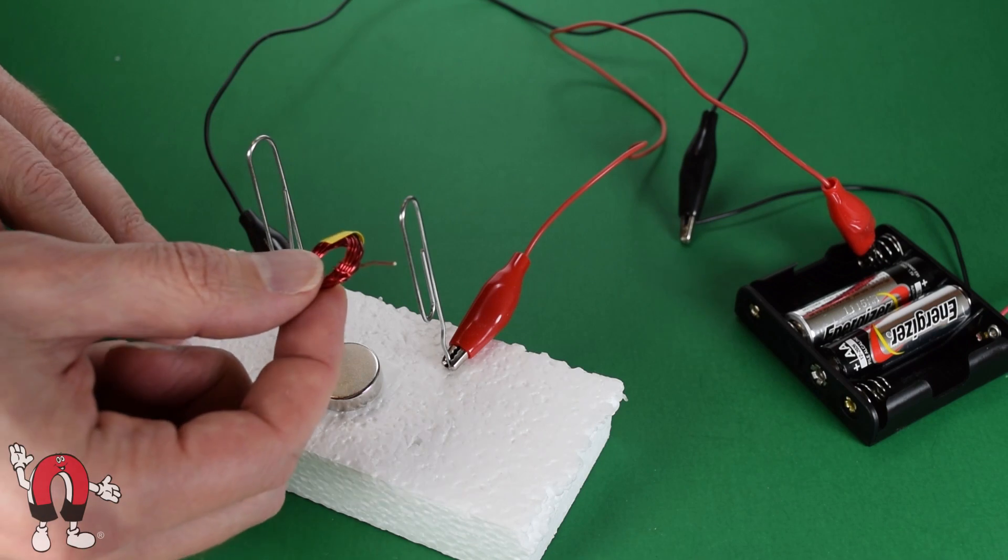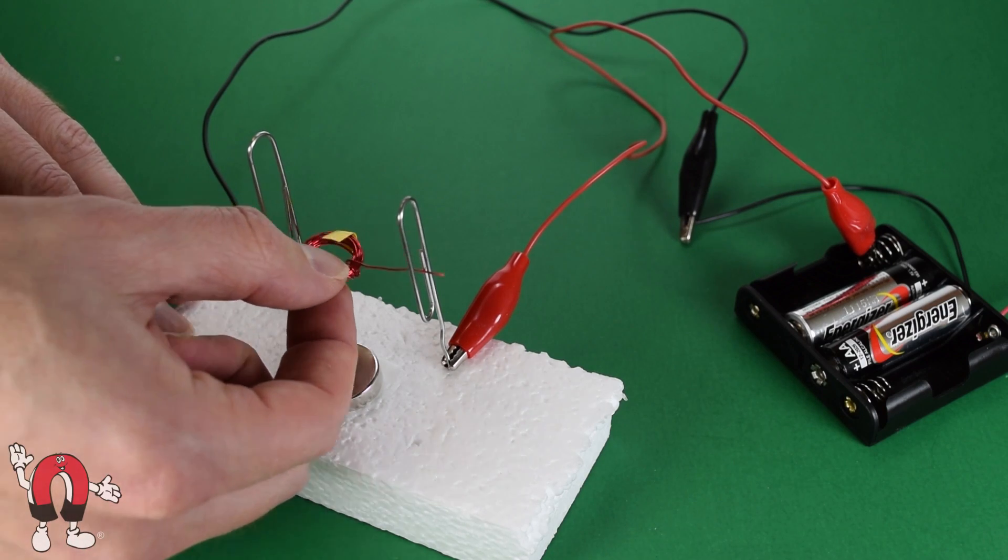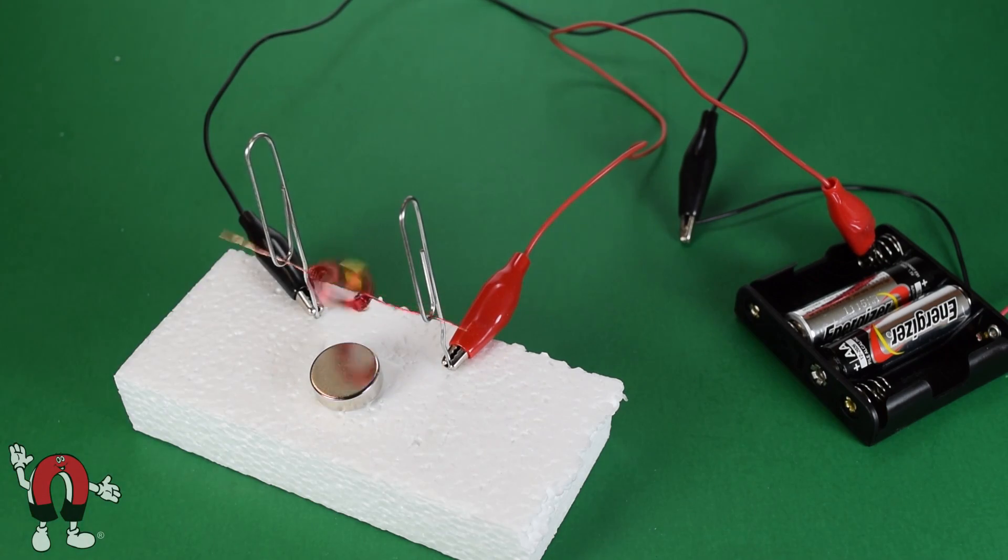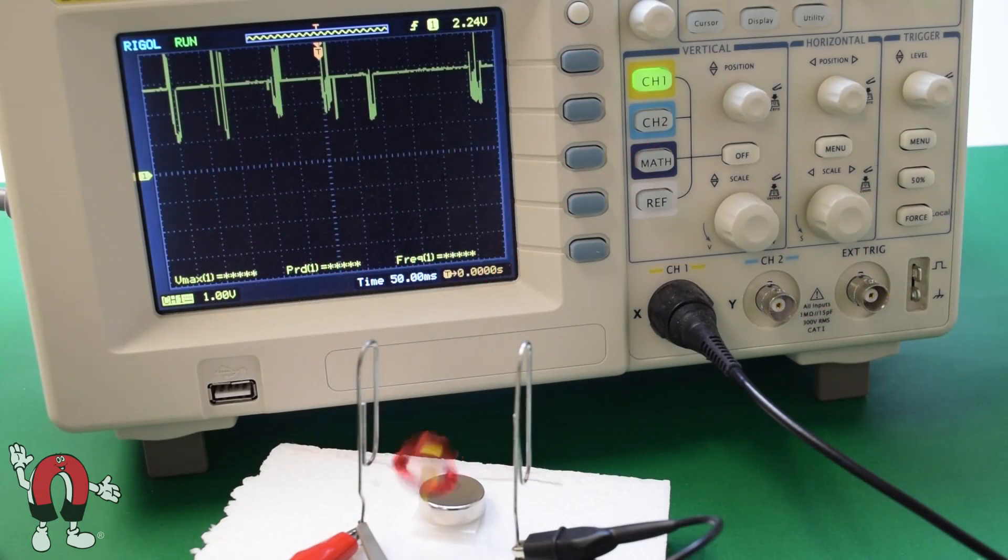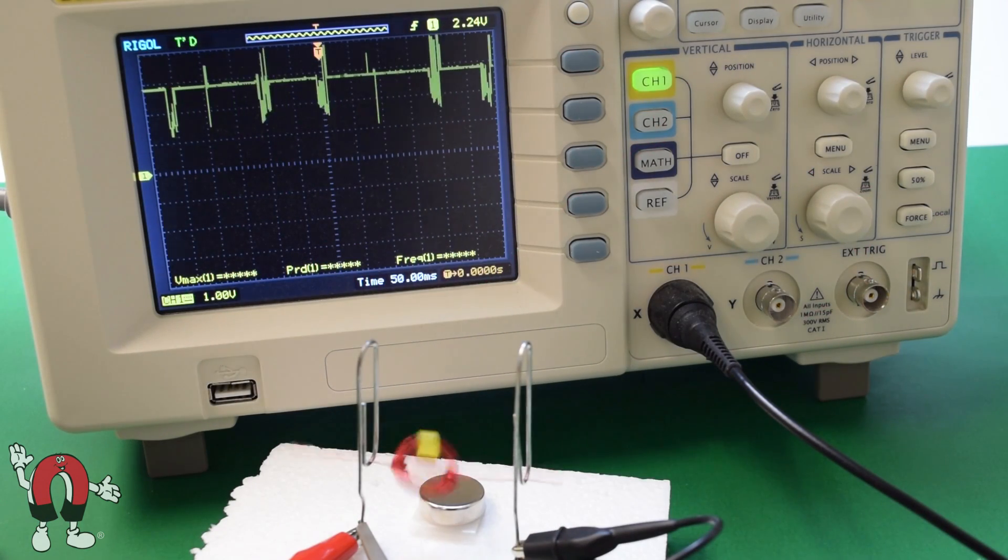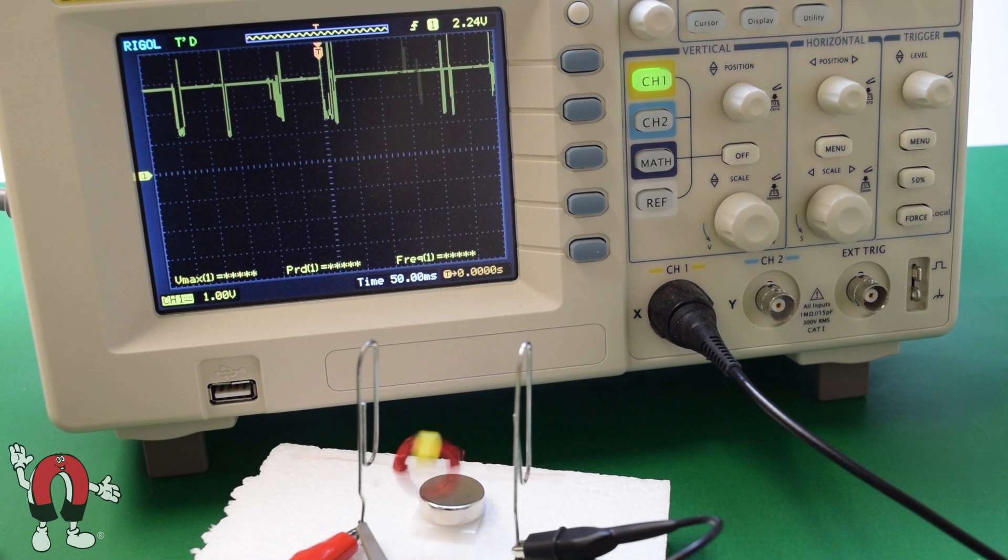Let's see if it works. You can see on the oscilloscope when the spinning rotor actually makes electrical contact.